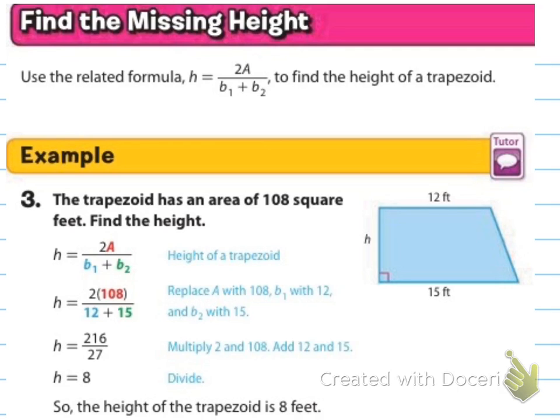So, find the missing height. So, it says, use the related formula H equals 2 times A over B sub 1 plus B sub 2 to find the height of a trapezoid. The trapezoid has an area of 108 square feet. Find the height. So, it's telling us that this area is 108 feet squared, and they want us to find the height. They've given us this formula 2 times the area divided by B sub 1 plus B sub 2. So, we just plug in. We use this formula, and we are going to plug in the 108 for A, and then 12 and 15 for our B sub 1, and then we have to multiply 2 times 108 to get 216, and then add 12 plus 15 to get 27, and then we're able to do 216 divided by 27, and it tells us the height is 8. So, 8 feet is the height of the trapezoid.